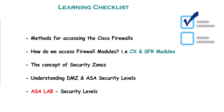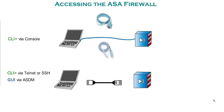As always, here is our learning checklist. First, we will be looking at the methods for accessing Cisco firewalls. Then we will look at how to access firewall modules — the Context Security and the SFR modules — the concept of security zones, and understanding DMZ and ASA security levels.